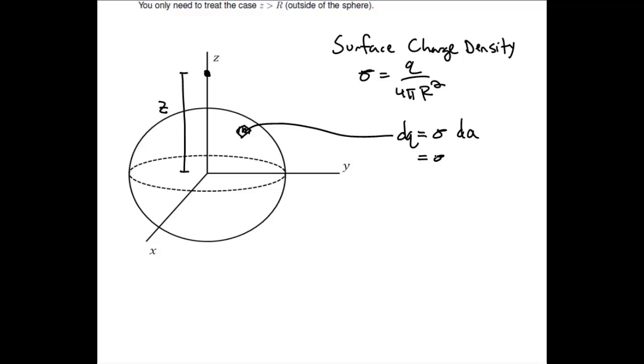And the small amount of area in this case will be a little bit of a displacement in the theta direction and a little bit of displacement in the phi direction in spherical coordinates. Writing those out, we have sigma r squared sine theta d theta d phi for that little bit of charge dq.